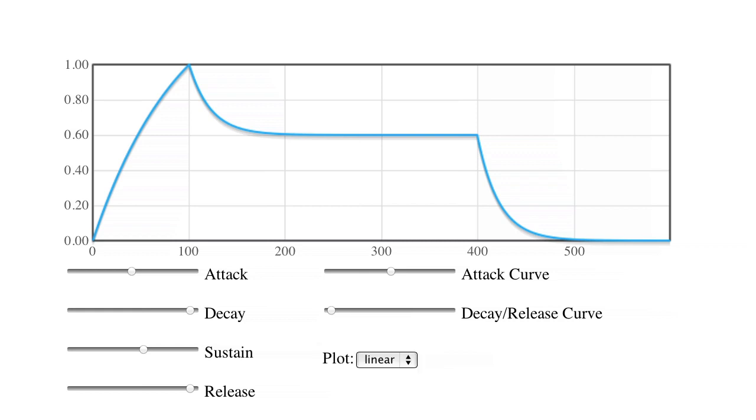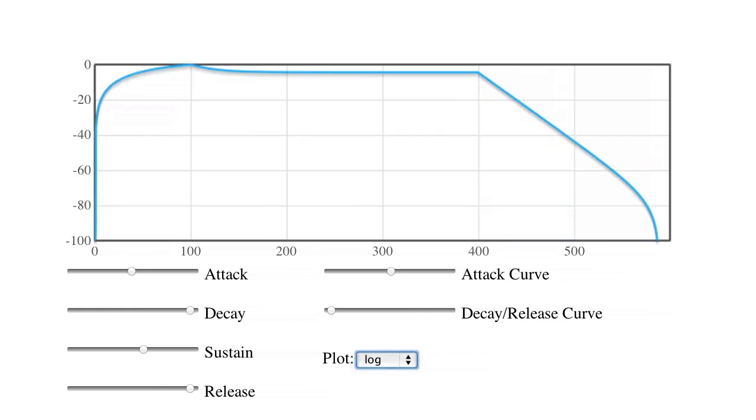In the case of the linear VCA, it's helpful to view the envelope on a log plot to see its effect in decibels. Here, we'll view just the attack and decay segments on a dB scale. See how the decay gives a linear change in dB until it gets to the minus 80 dB point at the default curve setting?